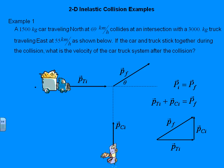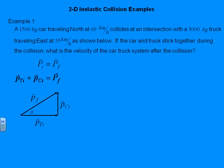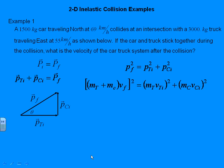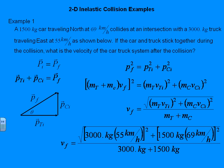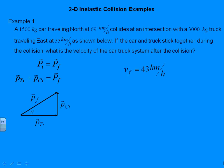Once we have that diagram, the math is fairly straightforward. We've got an angle theta right in our diagram and we can relate the lengths of the three sides using the Pythagorean theorem. Here I've dropped the arrows because we're only dealing with the magnitude of the momenta. Each one is, of course, mass times velocity. Be careful that the final momentum uses the mass of the entire system. Solving for Vf — squaring everything, dividing, and taking the square root — and plugging in all numbers gives us 43 kilometers per hour. Notice the kilograms all cancel, so the units work out fine.